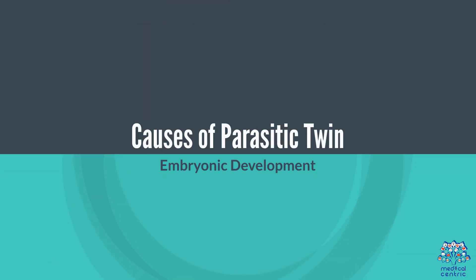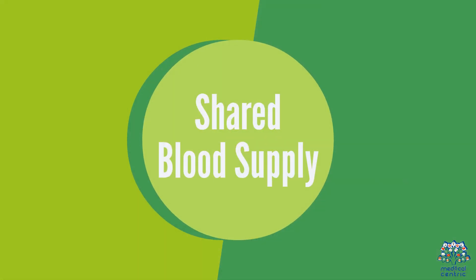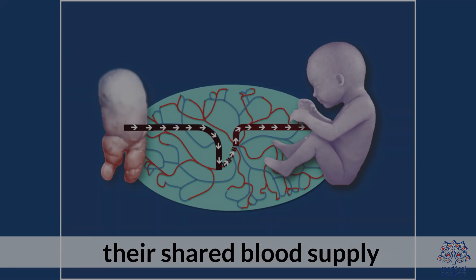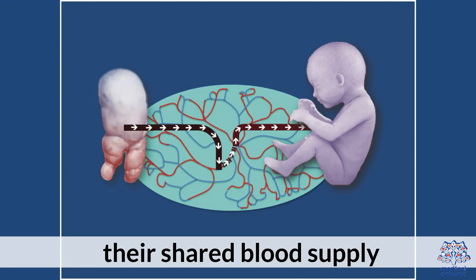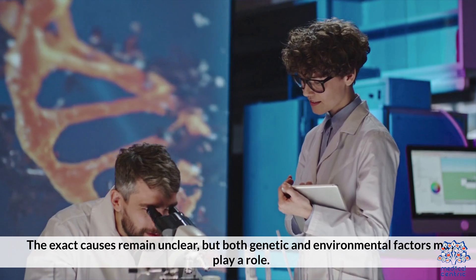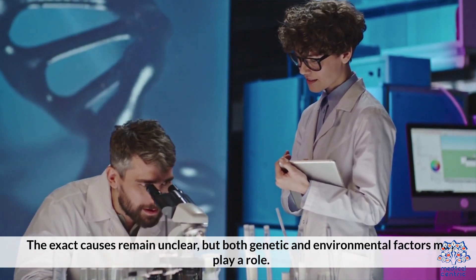Causes of parasitic twin. Embryonic development — early twinning: this occurs very early in the embryonic stage when the zygote divides incompletely. The parasitic twin may attach to the autocyte and derive nutrients from their shared blood supply. The exact causes remain unclear, but both genetic and environmental factors may play a role.